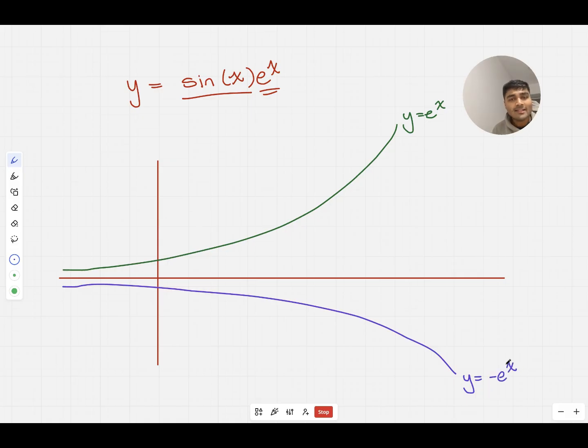Now, why have I done this? Well, because we know that sine of x times e to the x, because sine of x is always between minus 1 and 1, sine of x times e to the x is always going to be somewhere in between these two curves.